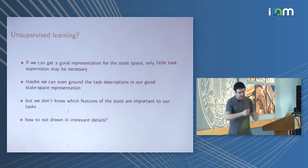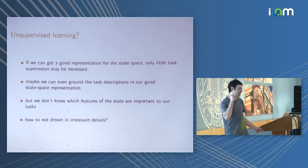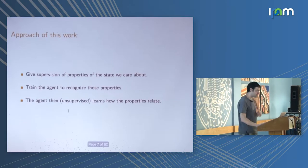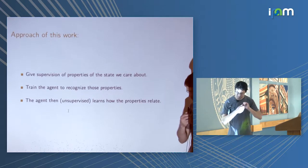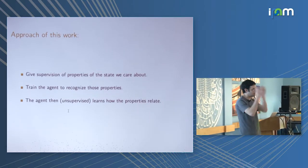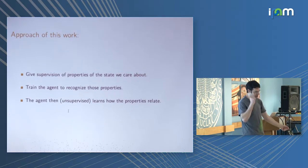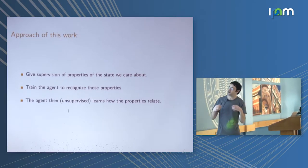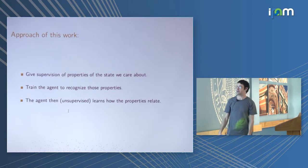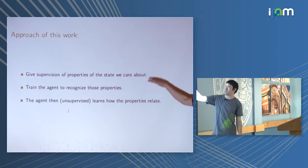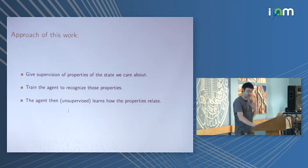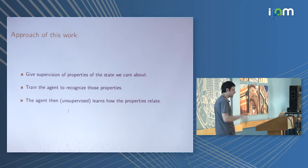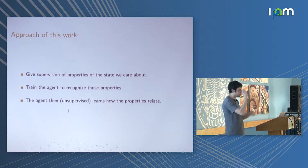The trouble is, if you just do purely unsupervised learning, you may not know which features of the state are important to the tasks the user cares about. Generically, if you have an agent in an environment, there are lots of things it can see that you will never care about. So how do we not drown in irrelevant details? The approach of this work is to make some intermediate representation — not natural language, more abstract than the actual state space, but easier to deal with than natural language — and train the agent to understand it.